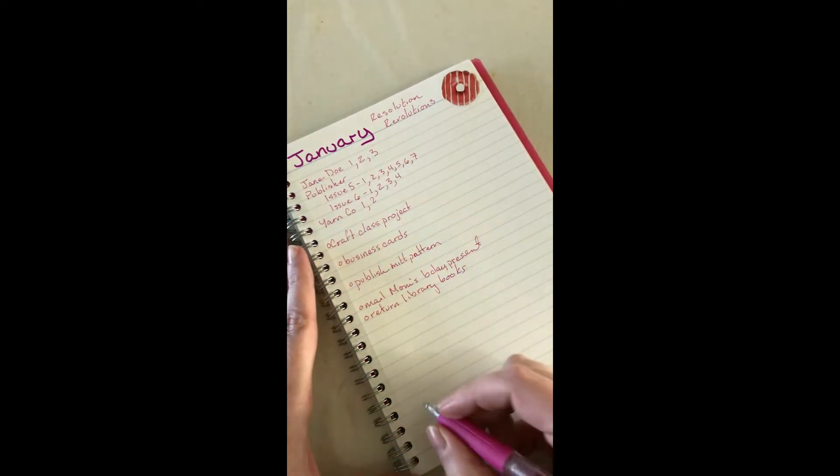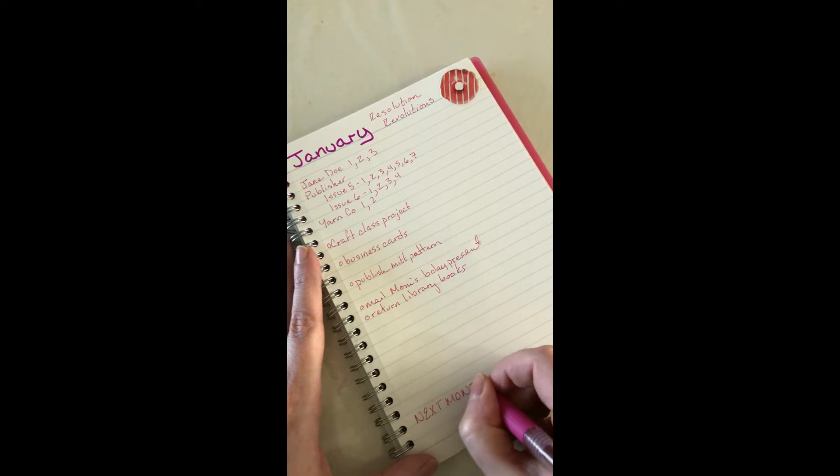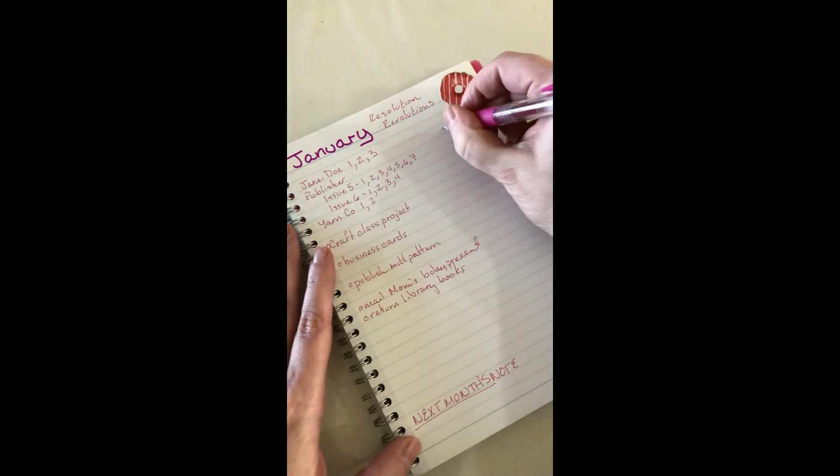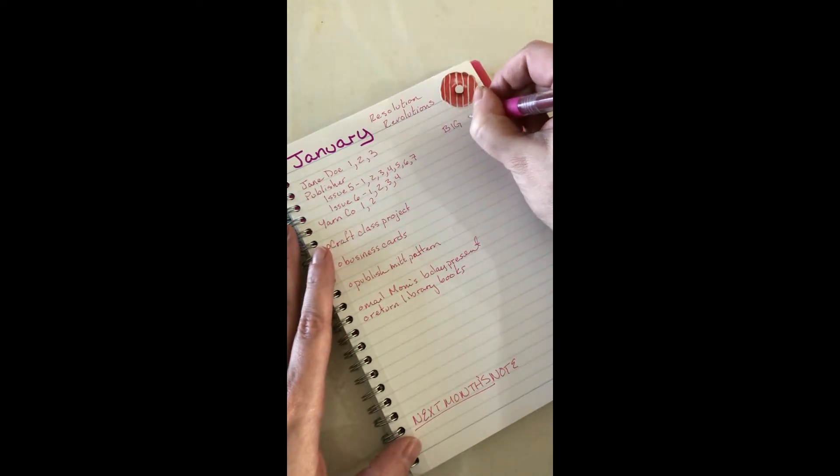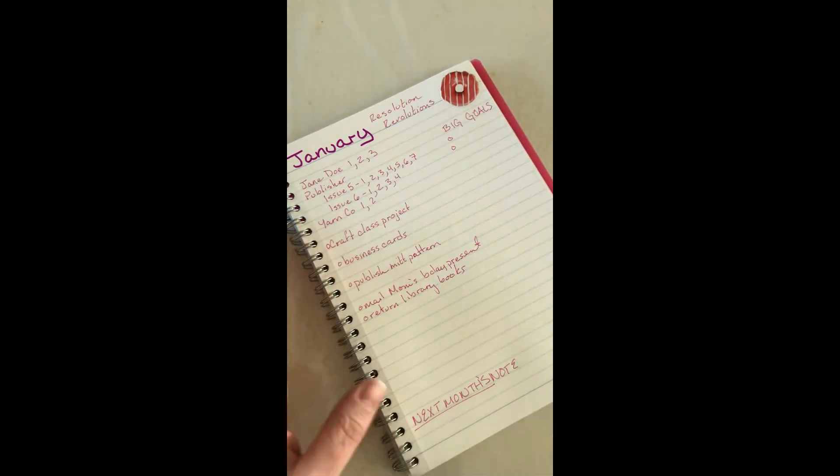At the bottom I'll usually put like next month, so something pops up that I know isn't going to happen in January but I need to focus on it in February. I can plop it down here and I'll see that when I do the February page. I like to make a section of big goals and this is like two overreaching items.